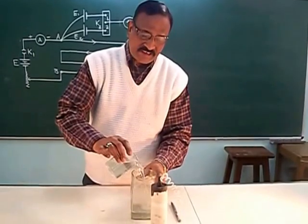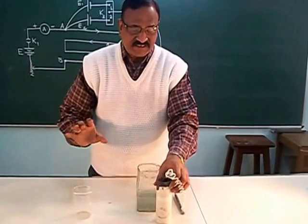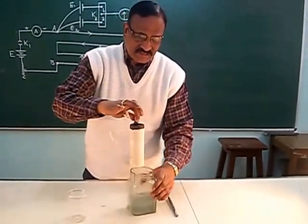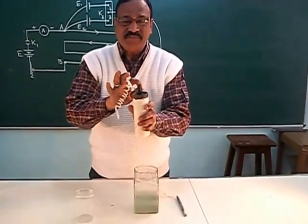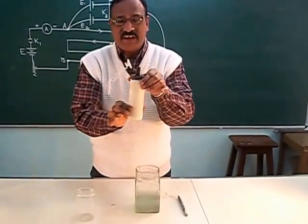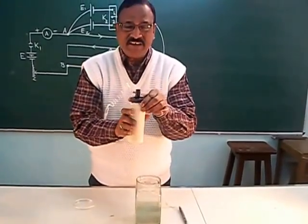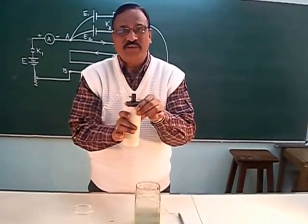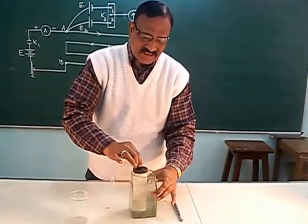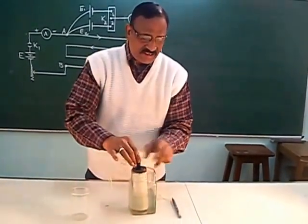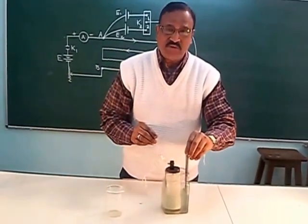First, let us put ammonium chloride inside the container so the electrolyte is inside. Then I place the sealed porous pot, which contains a carbon rod as the positive electrode. It has charcoal powder and manganese dioxide inside, and the manganese dioxide plays the role of depolarizer. The whole assembly is merged inside, and when you put in the zinc electrode, the cell starts working.